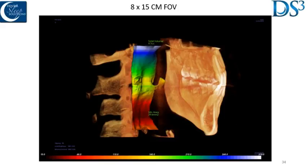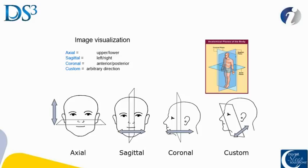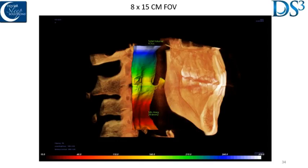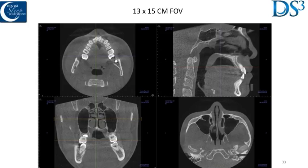Different fields of view are available depending on which unit you purchase. This is what a 13 by 15 looks like — we can see everything from the nasal area and sinuses to the airway down to the epiglottis and back to the TMJ joints. The 13 and 15 refer to centimeters — 13 centimeters tall by 15 centimeters wide. A cone beam field of view is always given as height by width.